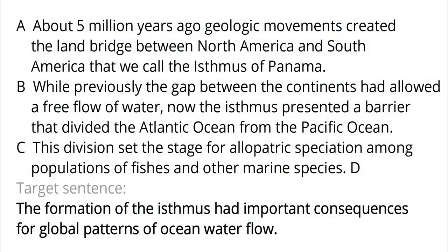A. About 5 million years ago, geologic movements created the land bridge between North America and South America that we call the Isthmus of Panama. While previously the gap between the continents had allowed a free flow of water, now the Isthmus presented a barrier that divided the Atlantic Ocean from the Pacific Ocean. C. This division set the stage for allopatric speciation among populations of fishes and other marine species.